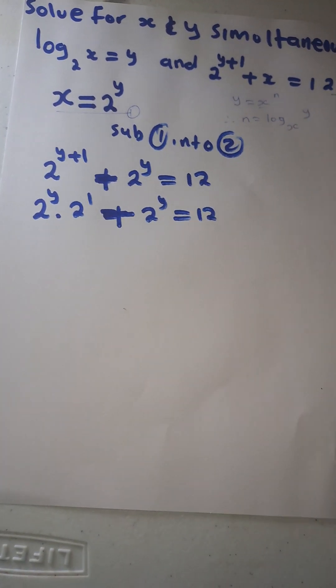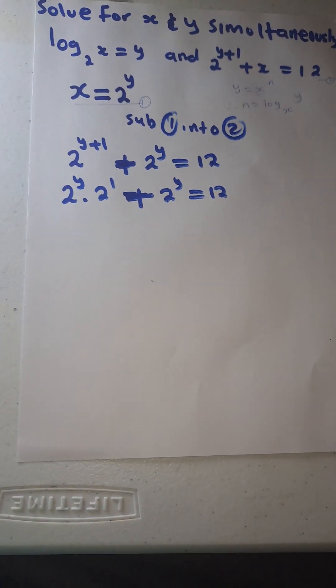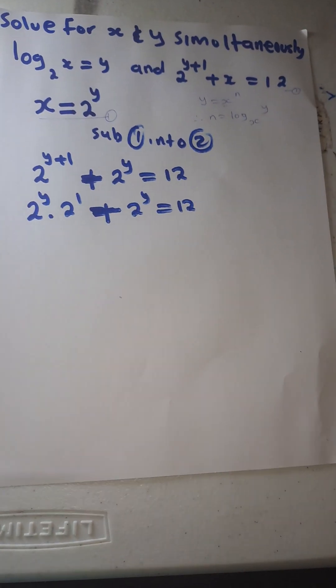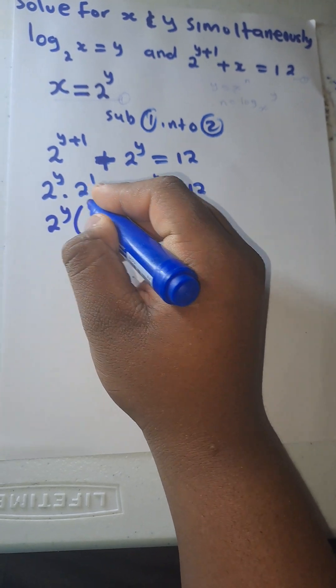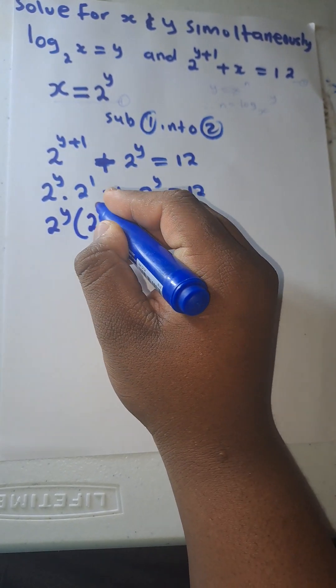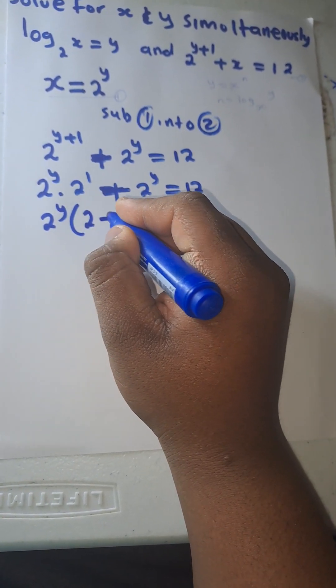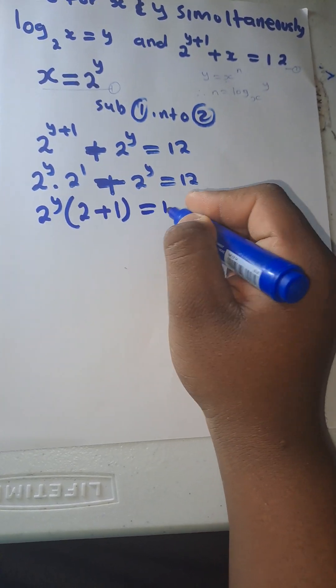So now it's gonna put 2 to the power y in the bracket. On my left here I'm left with 2, which is the same as 2 to the power 1, plus 1. This equals to 12.